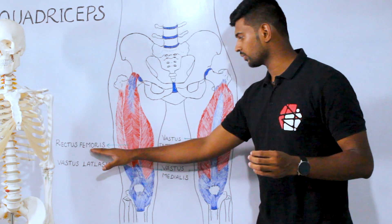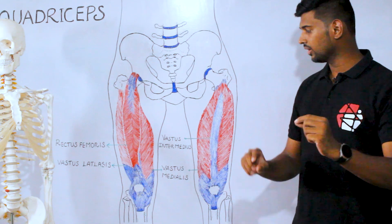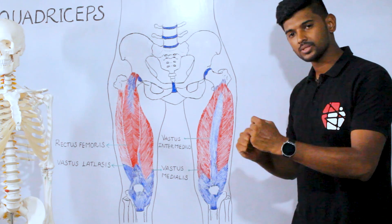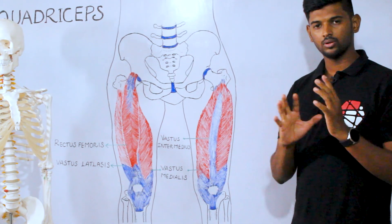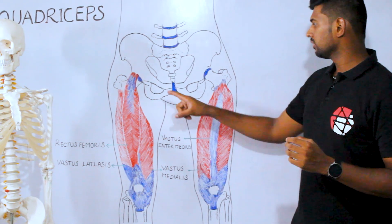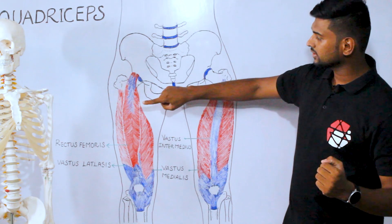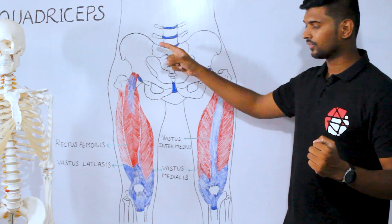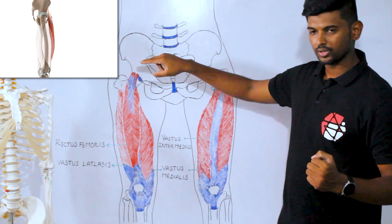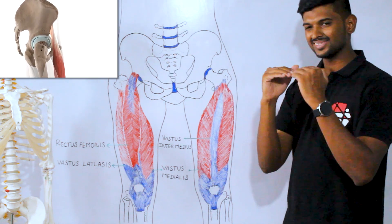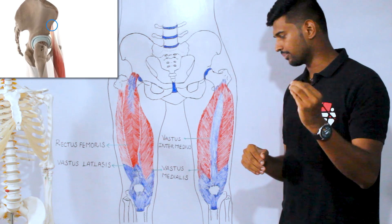First, rectus femoris is the only two-joint muscle among all four muscles. Because it is a two-joint muscle, it crosses and attaches above the hip joint — specifically at the anterior inferior iliac spine, just above the acetabular brim.